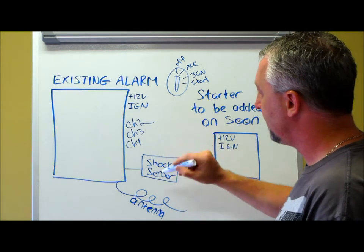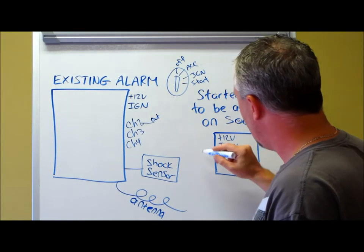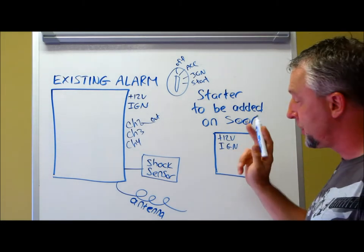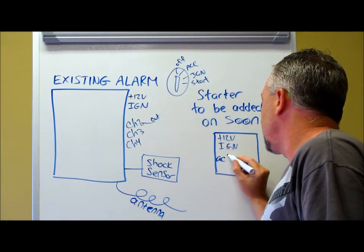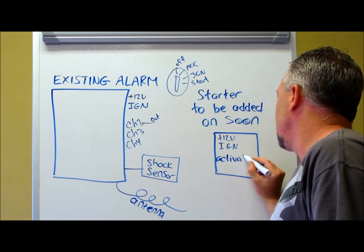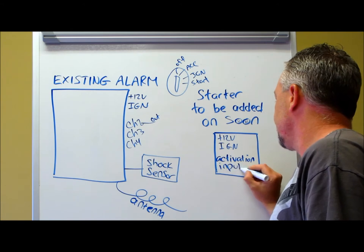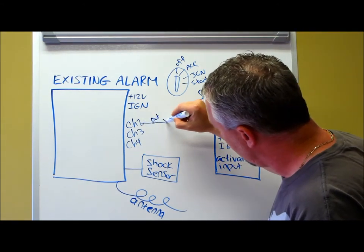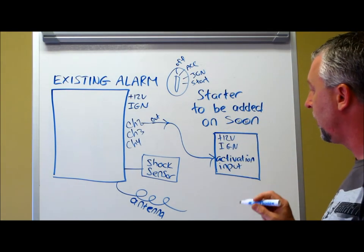Any remote start, slave remote start, I should say, an add-on remote start is going to have what's called an activation input wire. So once the ground signal from your alarm system goes out, goes into the activation input wire of the remote start.